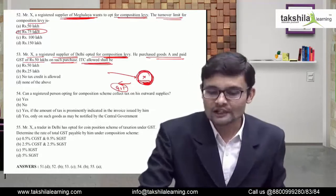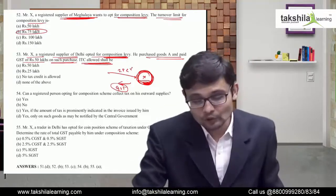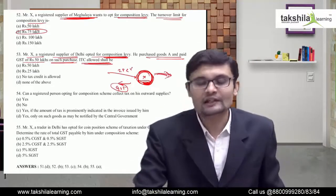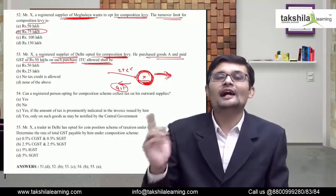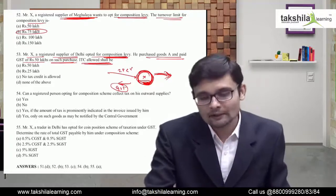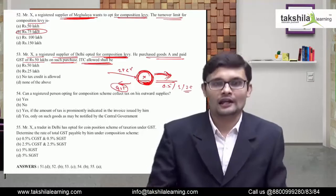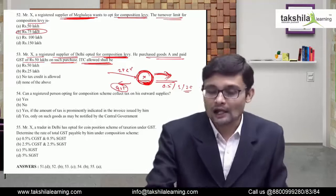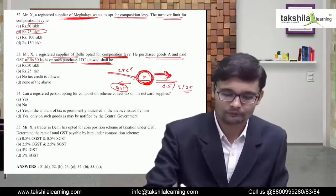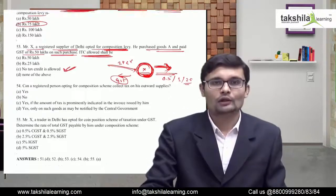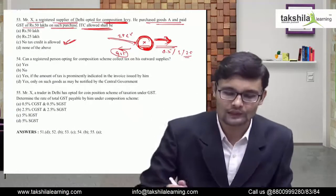Remember: a composition dealer cannot take any ITC. The reason is that when he is selling goods forward, he cannot charge GST on the sale. He is paying tax at a very low rate — 0.5%, 1%, or 2.5%. Since the output tax is so low, no input tax credit is ever allowed. The government gives no credit on inputs because the output tax liability is very minimal.